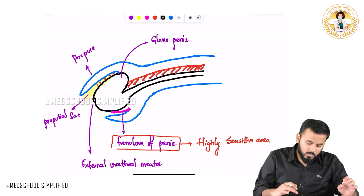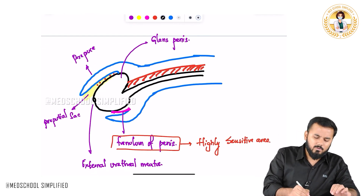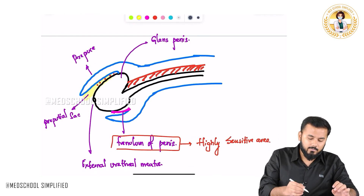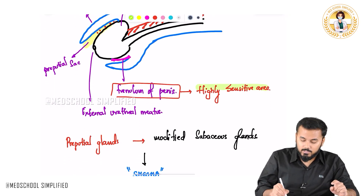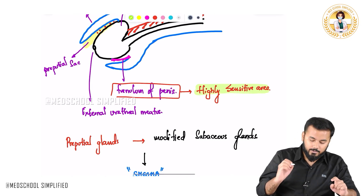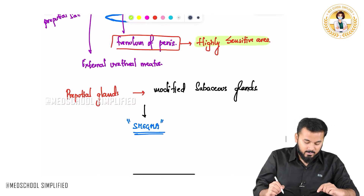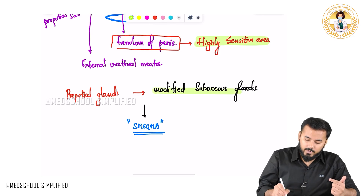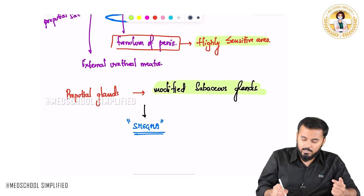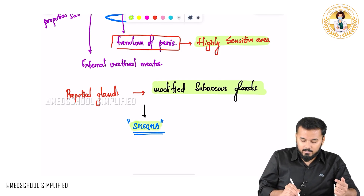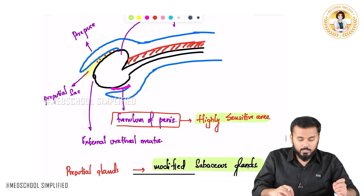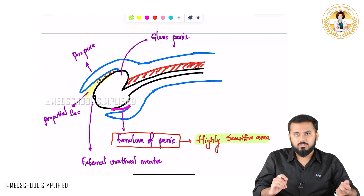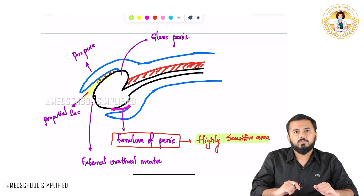So to summarize: the sensitive part of the penis which is highly sensitive is the frenulum of the penis. Preputial glands are the modified sebaceous glands and they release a substance called smegma. This is all you need to know regarding the transverse section of the penis. Thank you so much for watching. Goodbye.